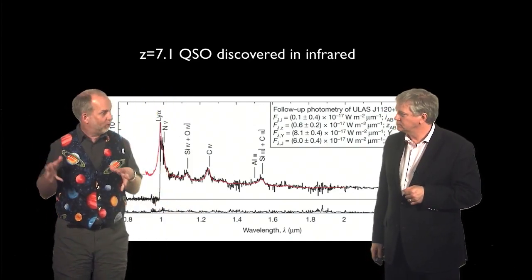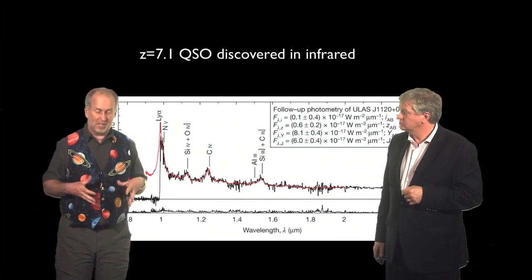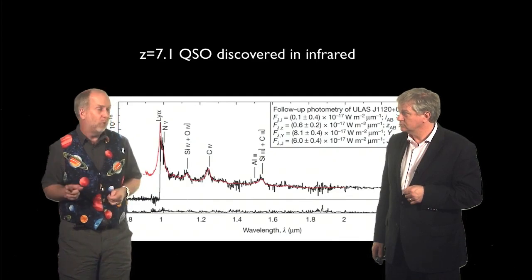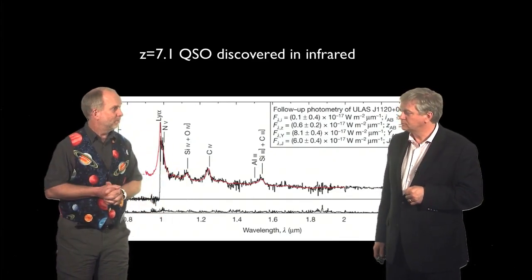The universe started off very hot. At redshift about a thousand, it cooled down enough to become neutral. It stayed neutral all the way down to redshift about six, when something, but not quasars, put out enough ultraviolet to ionize it again. Nice and simple.